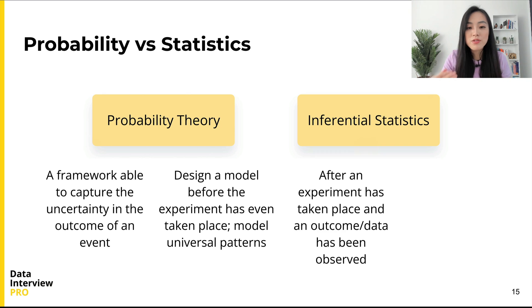An example is the law of large numbers I mentioned earlier. On the other hand, inferential statistics mostly comes into play after an experiment has taken place and an outcome or data has been observed. The goal is often to recover a general probabilistic model from observed data.